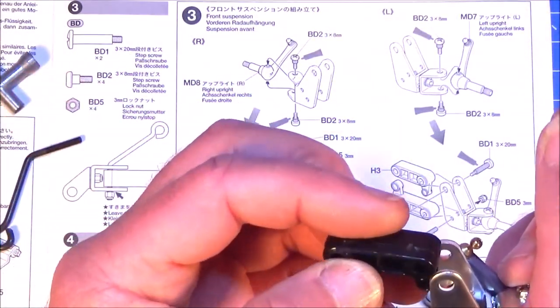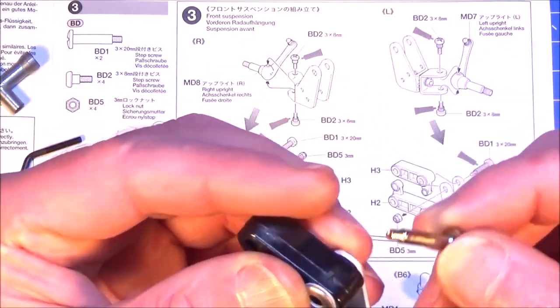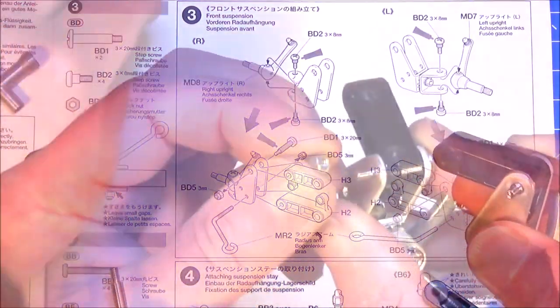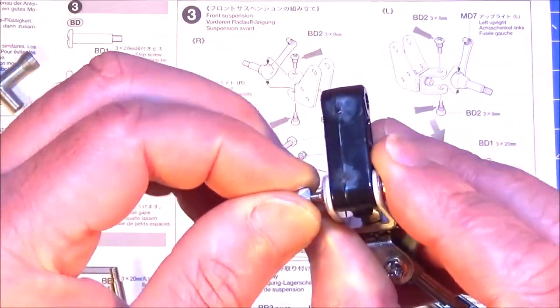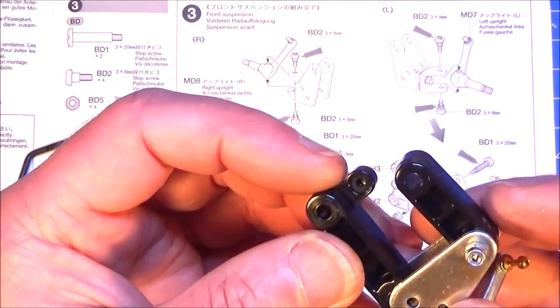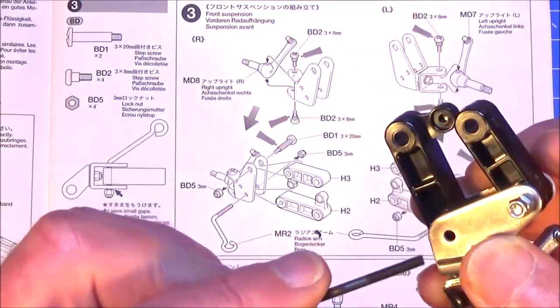Then get plastic part H3 and that's going to go in the top hole. And then you've got the long step screw that goes from behind. Secure that with a 3mm lock nut. Then part H2, you want this part like so.